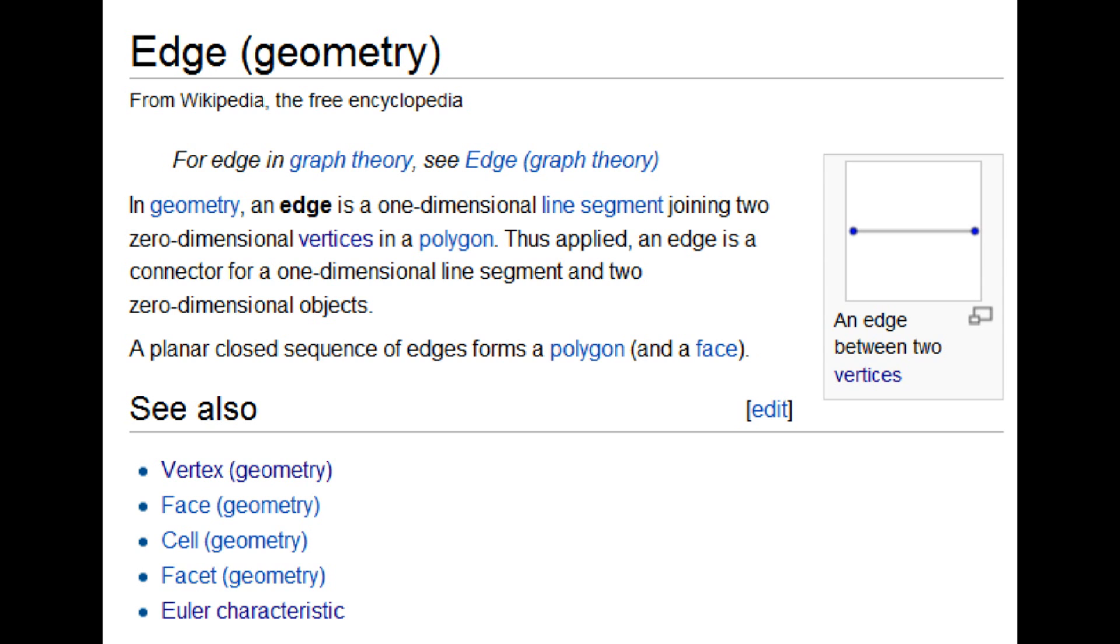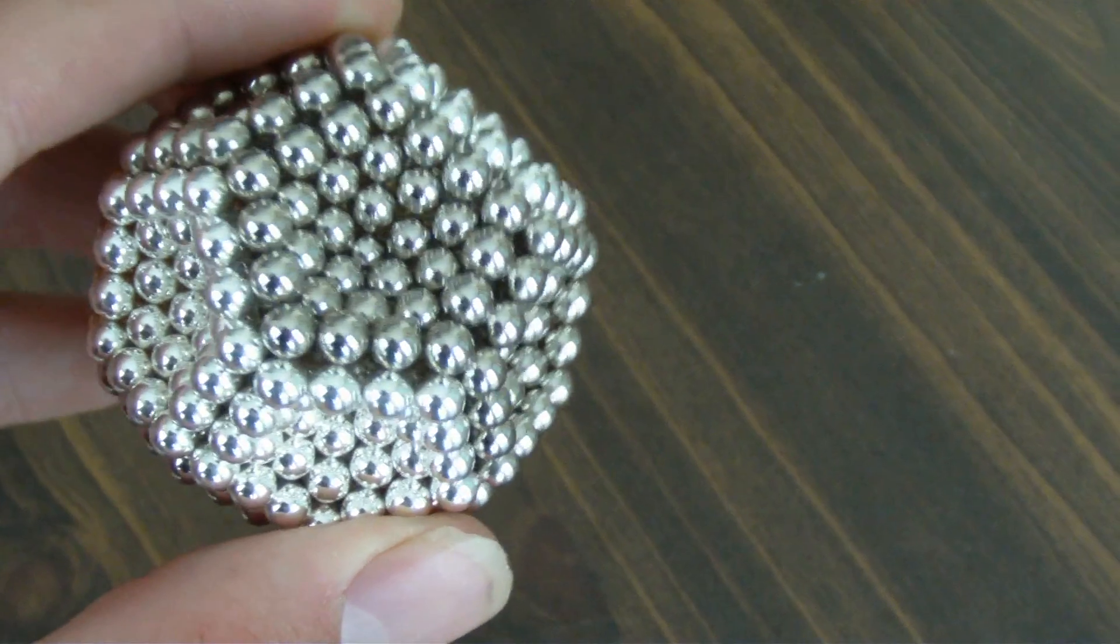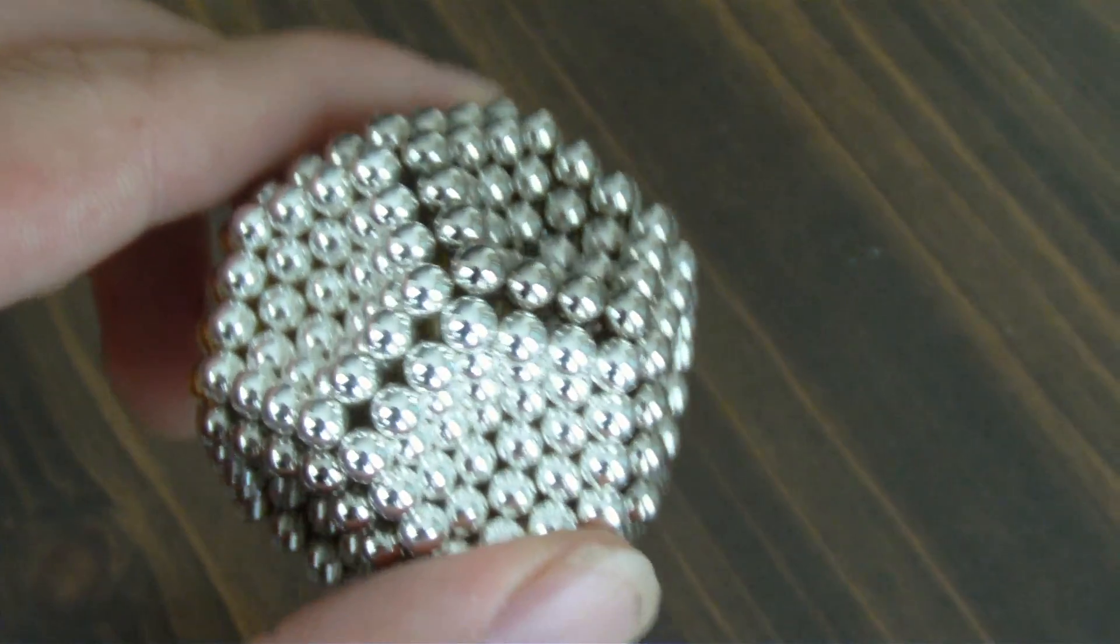Edges usually connect together at a single point, and these points, or vertices, usually stick out on the surface of the solid. However, if the solid has some points that stick inward, it is called a concave solid.